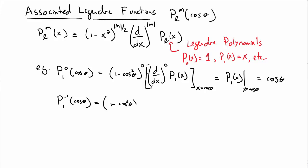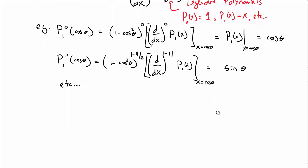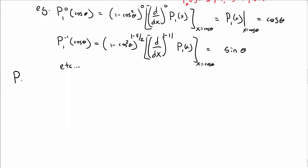By a similar story, P_1^(-1) would give us (1 - cos²θ)^(-1/2) times |d/dx|^(|-1|) of P_1(x), again evaluated at x equal to cosine theta at the end of the day. And so we have to be a little bit careful about absolute values here, but we end up with just sine theta in this case.